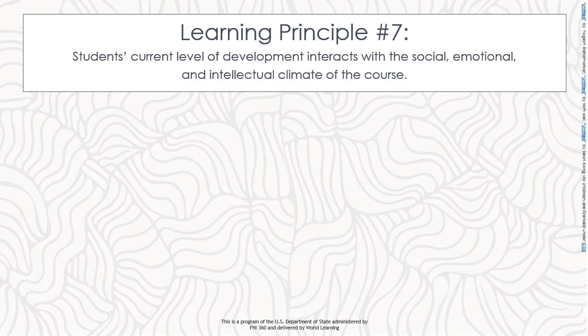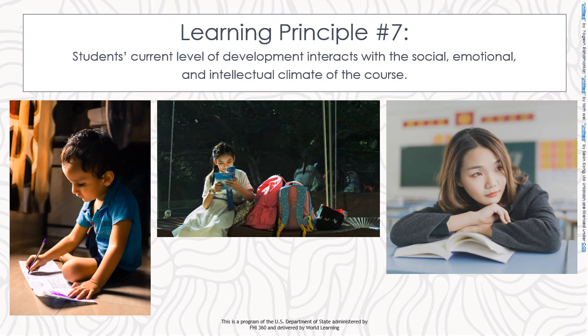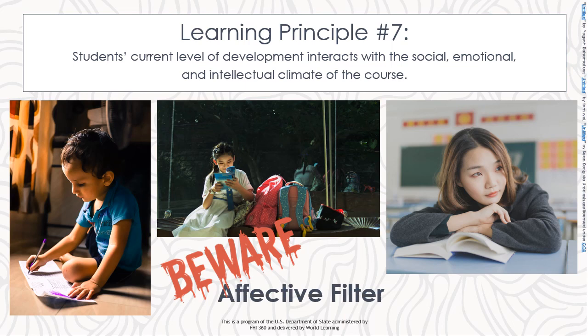Learning principle number seven: students' current level of development interacts with the social, emotional, and intellectual climate of the course. We must ensure that our lessons are appropriate for the developmental phase of our students, as well as their social and emotional needs. Learners need to feel comfortable enough in class to experiment and express themselves. When they do not feel that way, the affective filter will stop them from learning as much as they were prepared to learn. We will return to the issue of creating a positive classroom environment in Module 5.